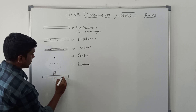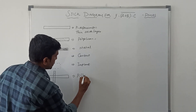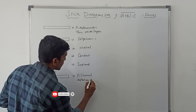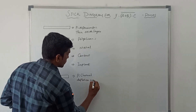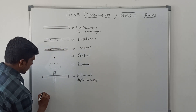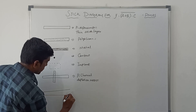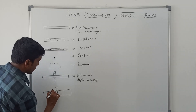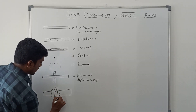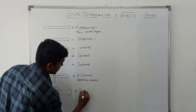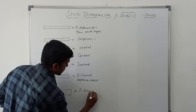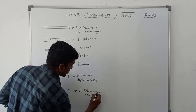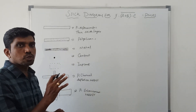This one is called a P-channel depletion MOSFET. This one is called a T-channel enhancement mode MOSFET. These are the graphical representations used in the stick diagram.